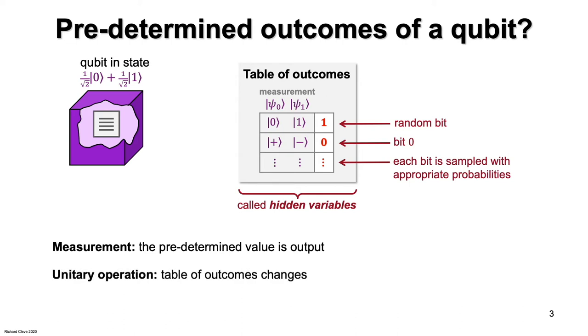So a measurement produces the predetermined value from the output table. What about applying a unitary operation? This would rearrange the table of outcomes in some systematic way. For example, the effect of a Hadamard transform would swap the first two bits of the table.